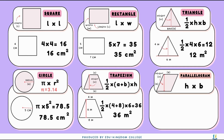Moving on to this trapezium. It has a height of 6 meters, the longer line at the bottom is 8 meters, and the shorter top is 4 meters. A half times 4 plus 8 times 6 gives us 36. Since the units are in meters, the area is 36 meters squared.